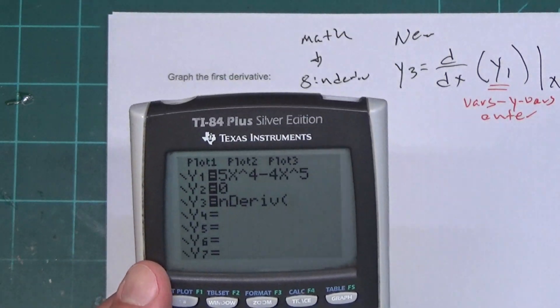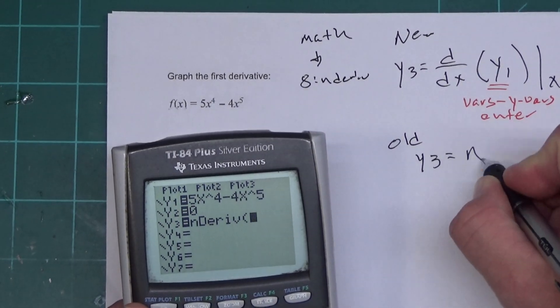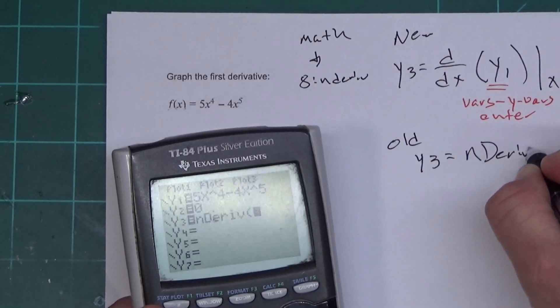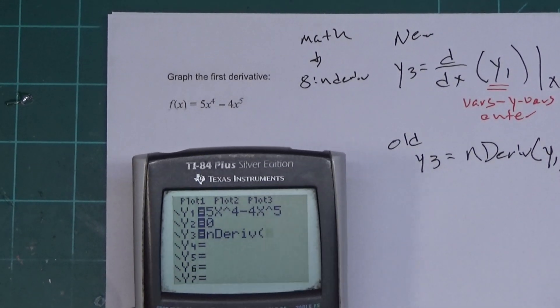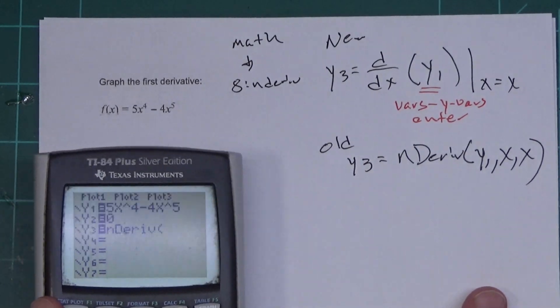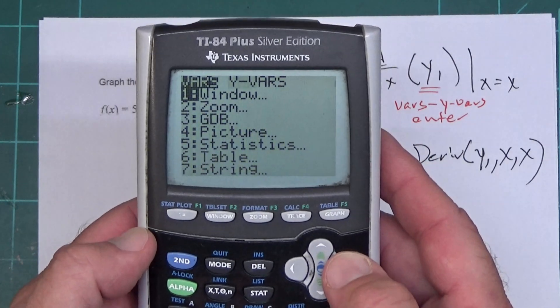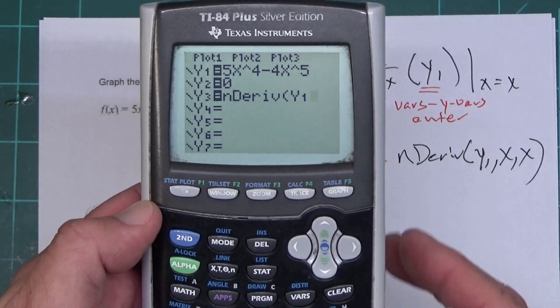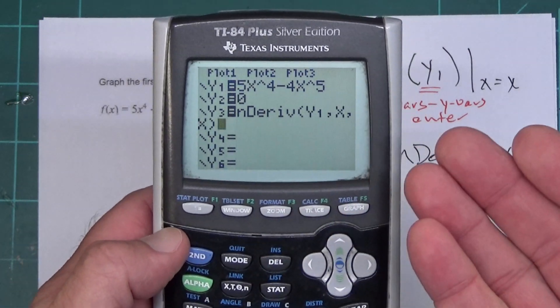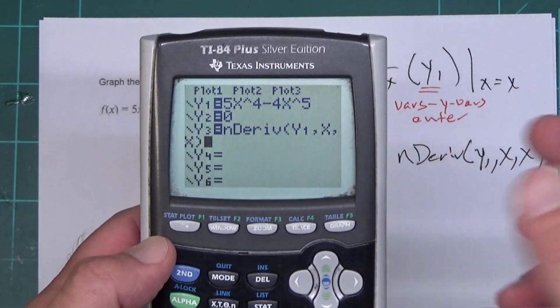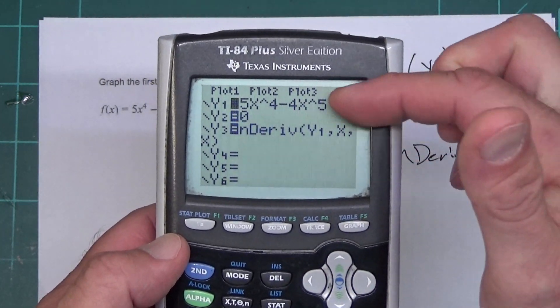On this one, we have to do it a little bit differently. On the old one, our y3 should say nDeriv y1, comma, x, comma, x, close parentheses. And we're off screen just a little bit. There we go. So you press the vars button, just like the other one, over to yvars, press enter twice, comma, x, comma, x, close parentheses. Now the other thing extra you're pressing here is a couple of commas. And like the other one, I want to come up here and turn that off. So I'll only graph the derivative in zero.